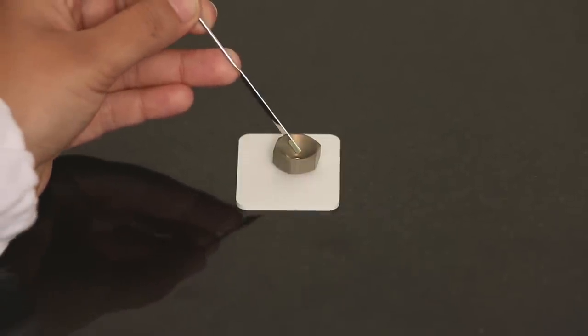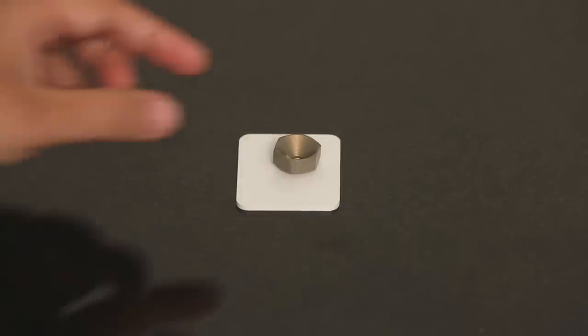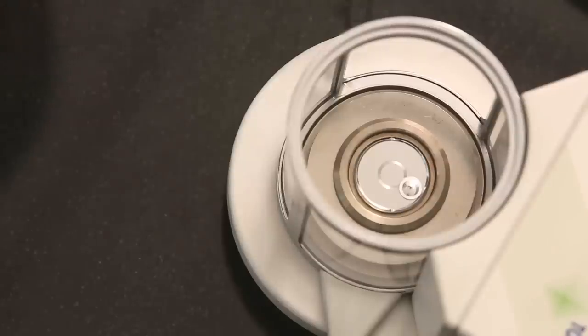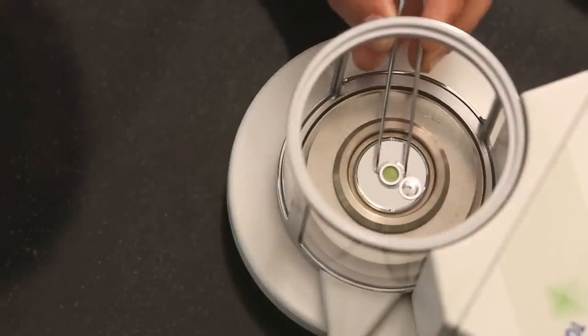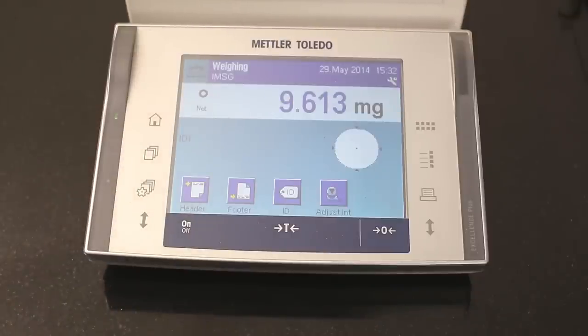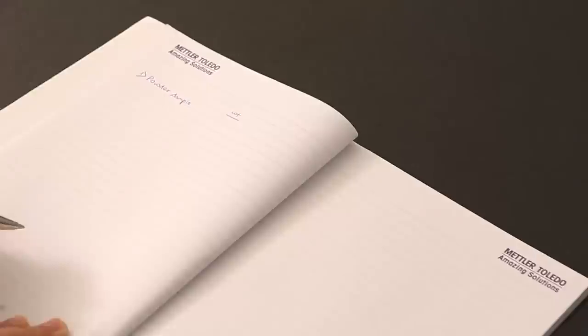The funnel makes sure that no sample is spilt on the rim of the crucible. Remove the funnel. Close the weighing compartment and let the balance stabilize. Read the weight displayed on the balance terminal and note it down in your laboratory journal.